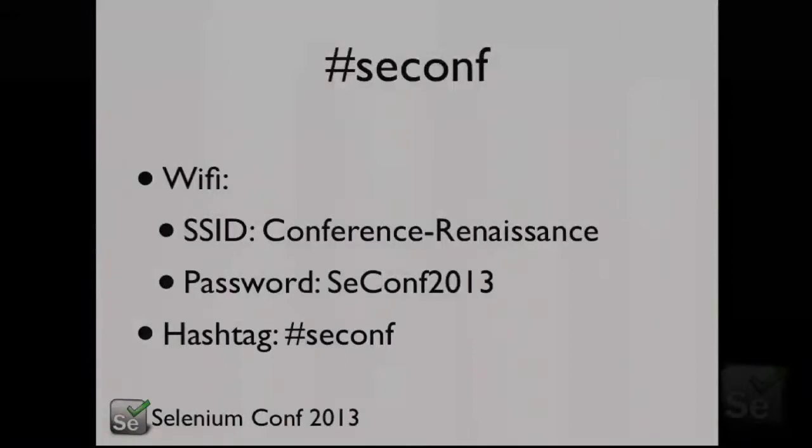You may have noticed that when you came in, we gave you a name tag. What you may not realize is that name tag is also the conference program. If you just pull out the paper insert, you can unfold it and it will give you the program of what's going on, where you can go, and you can plan your day. It also contains the network ID and name — that information is wrong. The password is right. The network name that you really care about is 'conference renaissance.' And the hashtag, if you're on Twitter or Google+, or anywhere else that accepts hashtags, is scconf.